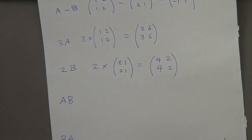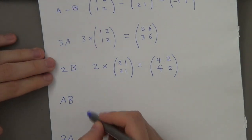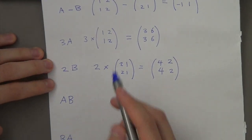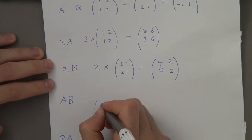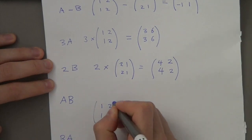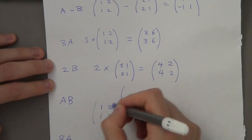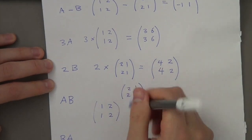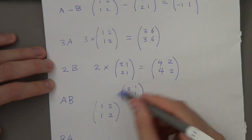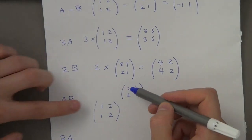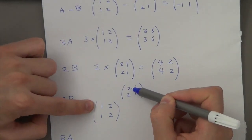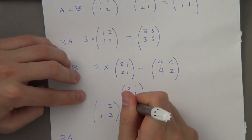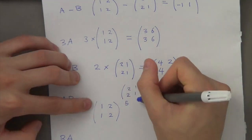Now this is the more involved bit — just more work to do. It says A multiplied by B, so I need to put A on the bottom and B on the top, and there's a reason why I'm placing the matrices like this. Watch the rule now: I need to do 2 times 1 plus 2 times 2, so 1 plus 4 gives me 5 in the top left.